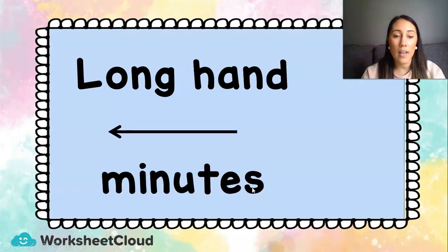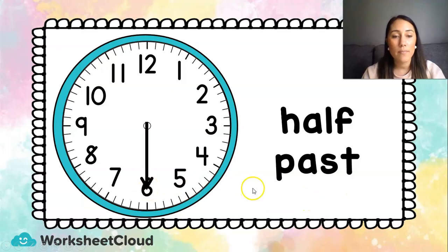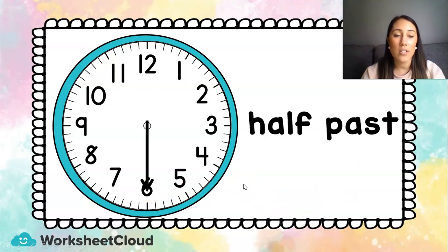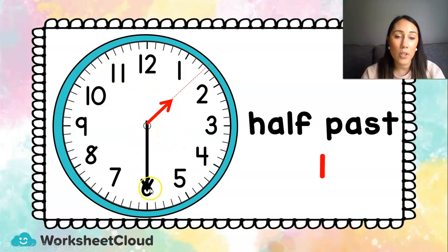The long hand can be in different places on the clock, and as it ticks around, we give it different names. When the long hand is on the 6, it is half past. The short hand is going to tell us the hour. So if the short hand is just past the 1 — halfway between the 1 and the 2 — we can say it is half past 1. Remember, we always read the clock from the long hand first: it is half past, and then we look at the hour — half past 1.